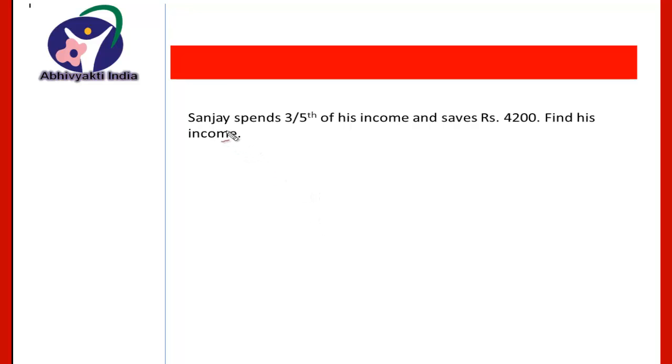Here is the question on the screen: Sanjay spends 3/5 of his income and saves Rs. 4200, find his income. Now we will use the trick directly. Income will be equal to saving, that is 4,200, multiplied by denominator—this is 3/5 of the income, so denominator is 5—and divided by the difference between the numerator and the denominator, that is 5 minus 3, that will be equal to 2.